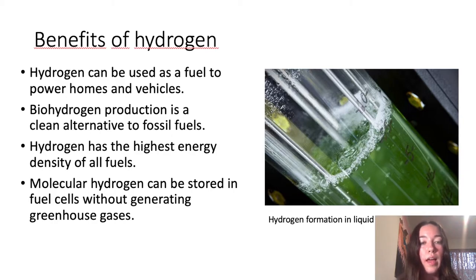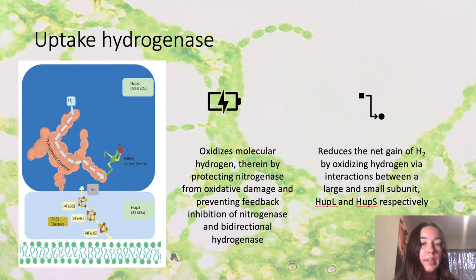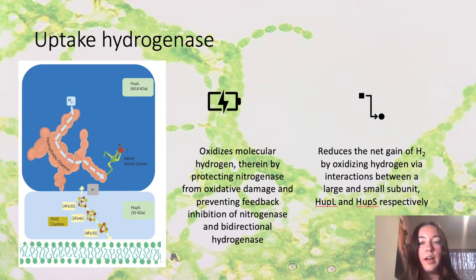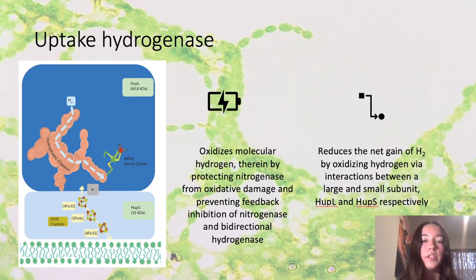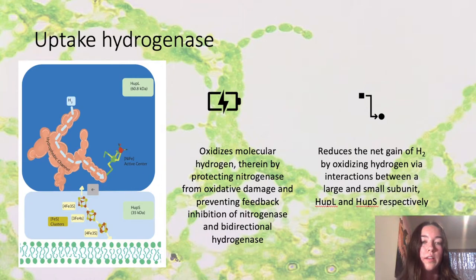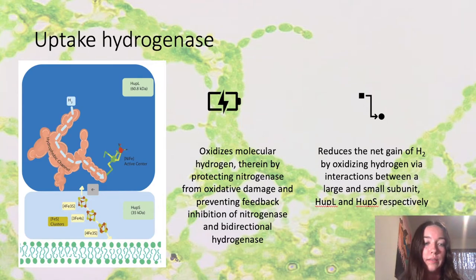The enzyme uptake hydrogenase in cyanobacteria oxidizes hydrogen, thereby reducing the overall hydrogen yield. Our goal is to inactivate uptake hydrogenase so that the hydrogen yield can be increased.